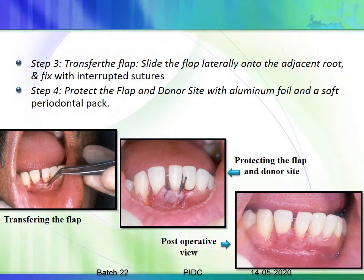After making the vertical incisions, slide the flap to the adjacent tooth and suture it with a sling suture as well as to the periosteum underneath. The post-operative view shows both coverage of the denuded root and healing of the connective tissue over this area. This technique is especially useful for single-rooted teeth with minimal mesiodistal dimension, such as mandibular anteriors.